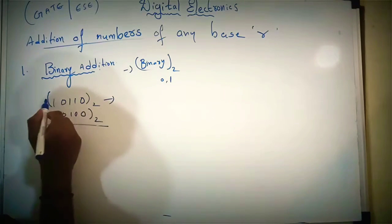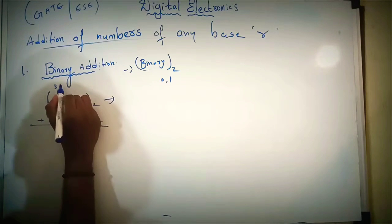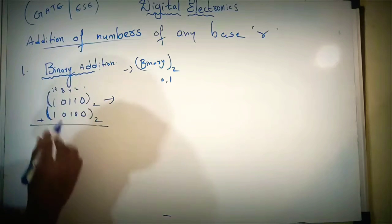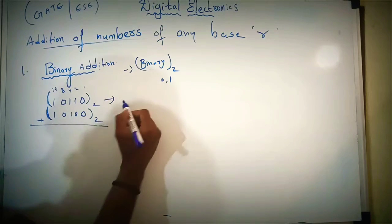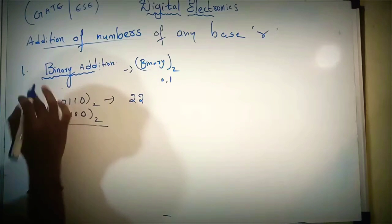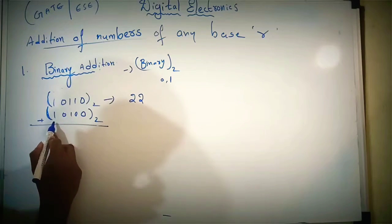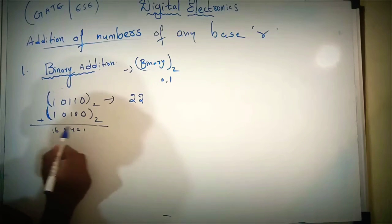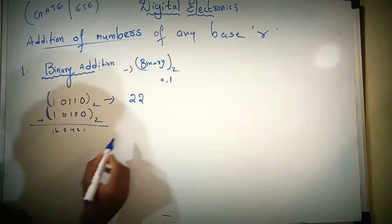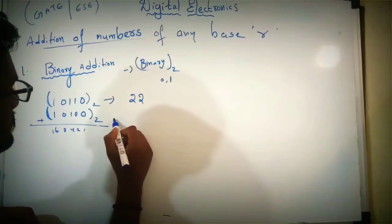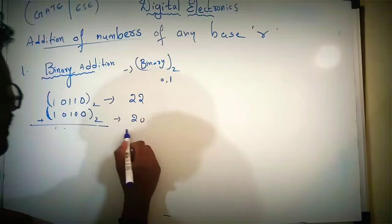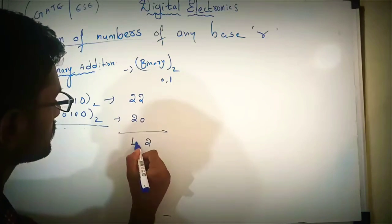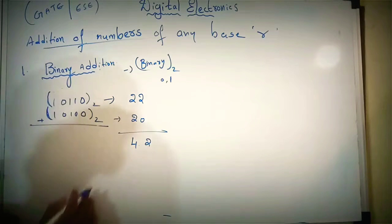Let's see the equivalent values: this is 8, 1, 2, 4, 8, 16. 16 plus 4 is 20, then 22. This value is 16, and 16 plus 4 is 20. This value is 14. After adding these two numbers we will get the result. Now let's perform the binary addition.